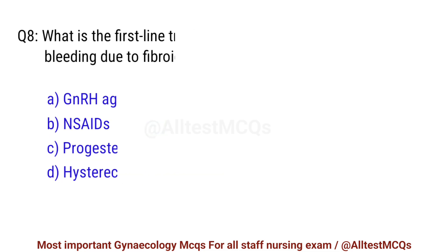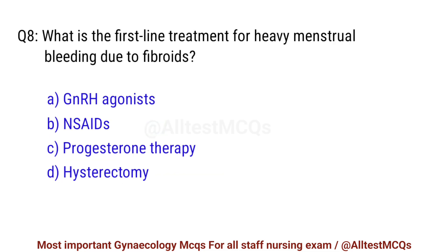Question No. 8. What is the first-line treatment for heavy menstrual bleeding due to fibroids? Right option is C. Progesterone therapy.